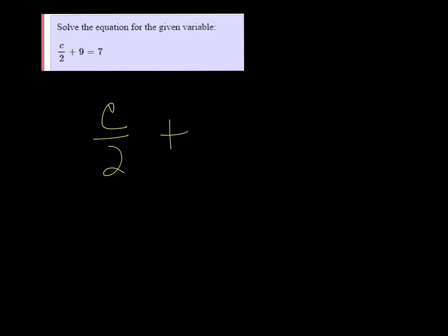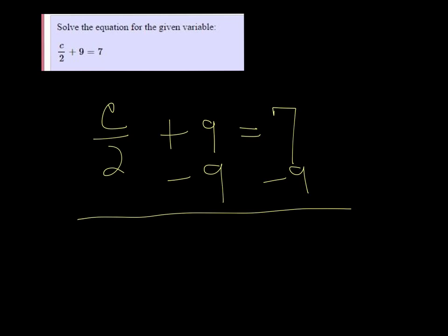We're going to solve c over 2 plus 9 equals 7. We want to start by subtracting 9, because you want to undo addition or subtraction first. So we're left with c over 2 equals negative 2.